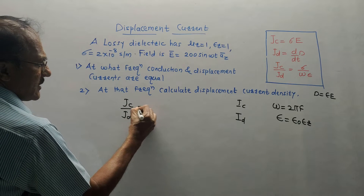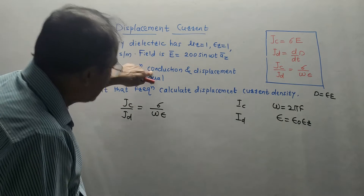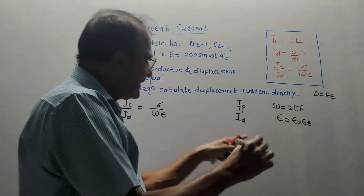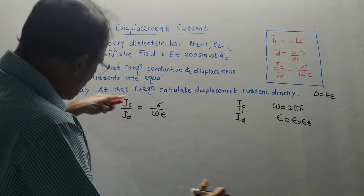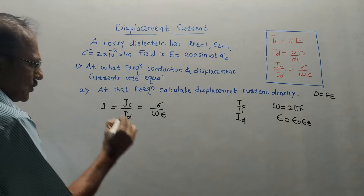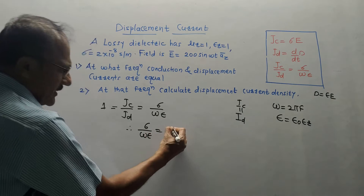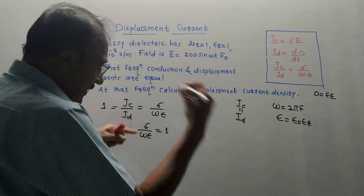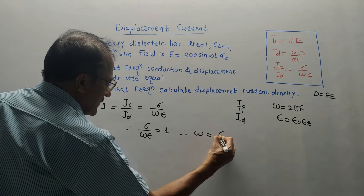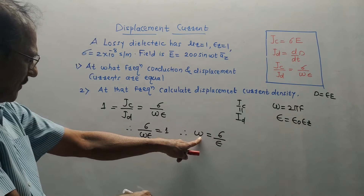We use the formula JC/JD equals sigma upon omega epsilon. Since JC equals JD, this ratio equals 1. So sigma upon omega epsilon equals 1. Rearranging, we are interested in calculating frequency. Therefore omega equals sigma upon epsilon.